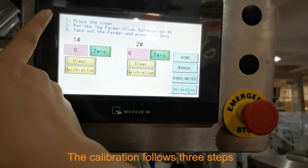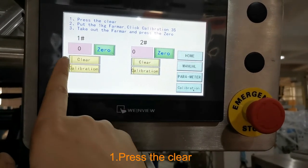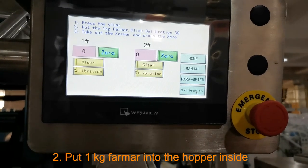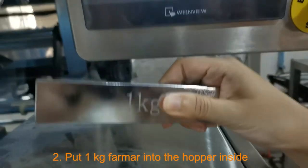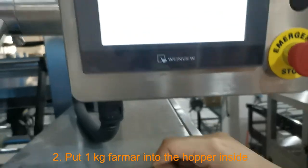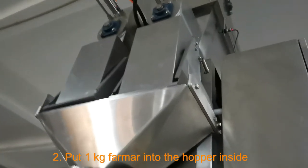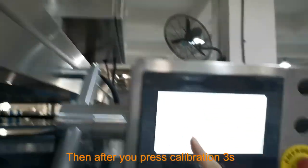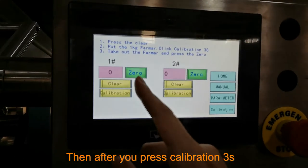Press the clean, and put the 1kg format - this is voltage format - into the voltage format, into the hopper inside. Then after you put the gram.